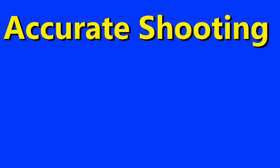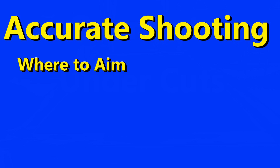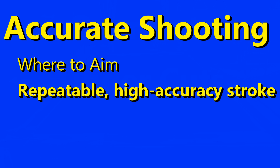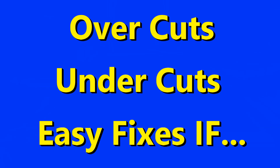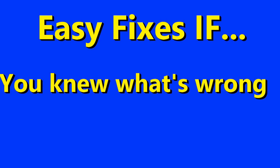Now let's talk about overcuts versus undercuts. To shoot accurately, you have to know where to aim, have good mechanics for a repeatable high-accuracy stroke, and good alignment, vision, and mental training for aiming. Now let's talk about the latter and patterns of shot-making errors — specifically overcutting and undercutting. Do you know if you have alignment or sighting errors that can be easily remedied if you only knew what they were?